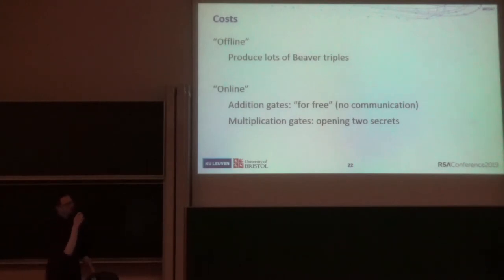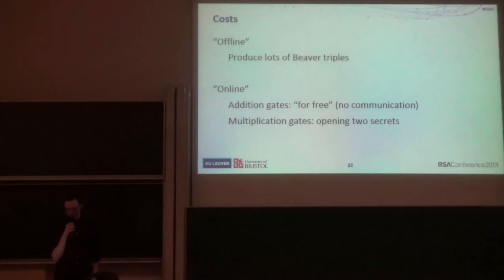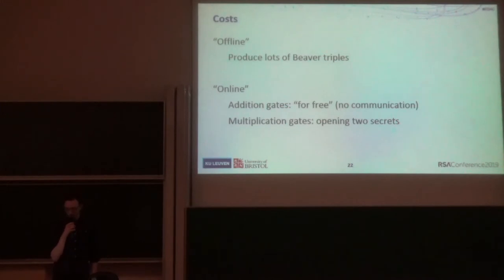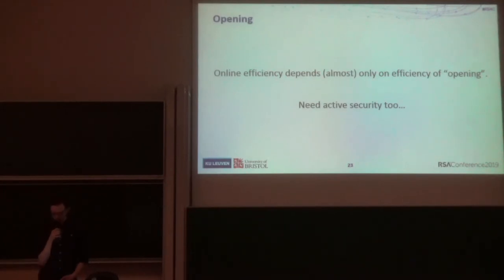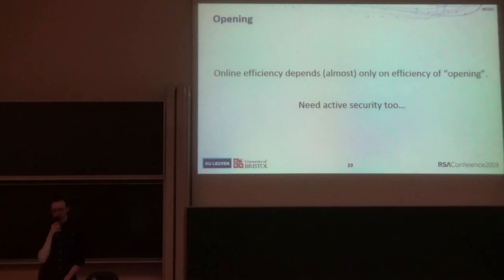The advantage of this approach is that we can produce lots of these A, B, and A times B secrets in a so-called offline phase. Then in an online phase, to perform additions in the arithmetic circuit you do local operations, and to do a multiplication you just have to open two secrets. The efficiency of your online phase only depends on the cost of doing these openings, which is something we look at in this paper. We also need to do this in active security, because additions happen with active security by the property that every share is held by at least one honest party, but we need to show that opening secrets can be done with active security too.